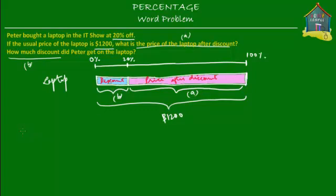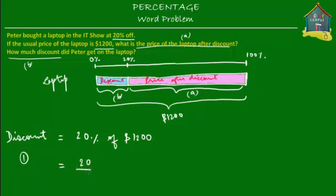Let's first find how much discount he got. He got a 20% discount. Now, 20% off means he got 20% of $1,200 as the discount. Let's call this method number one. 20% is equal to the fraction 20/100, and 20/100 of $1,200 means 20/100 times $1,200. Simplifying by canceling two zeros, you get 20 times $12, which equals $240. So the answer to question B is $240.